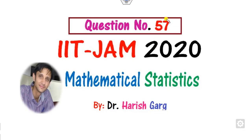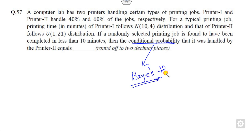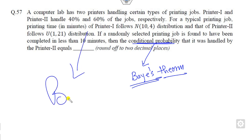Hello everyone, welcome to question number 57 which was asked in the IIT JAM 2020 Mathematical Statistics. There is no need to read the complete statement — the major task is to find the conditional probability. Whenever there is a conditional probability problem, we always work on Bayes' theorem. Remember that always — we can solve this question with the help of Bayes' theorem.